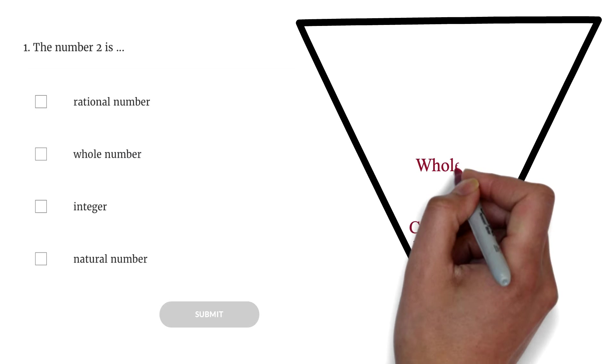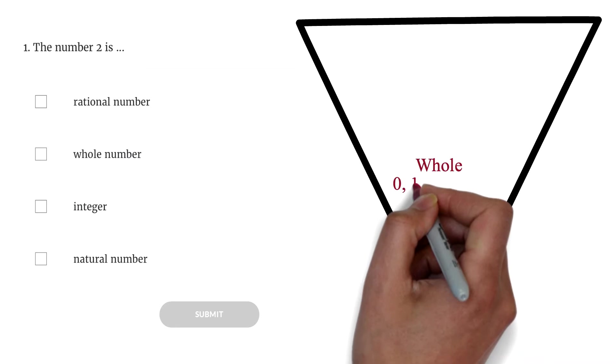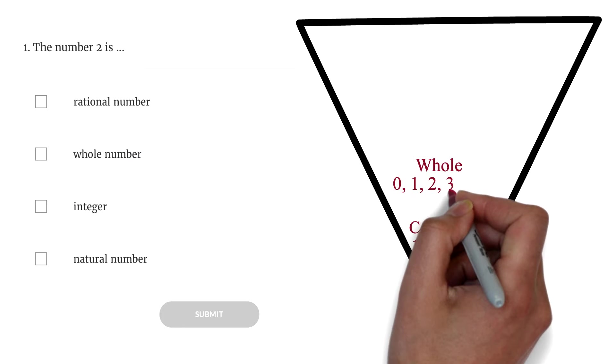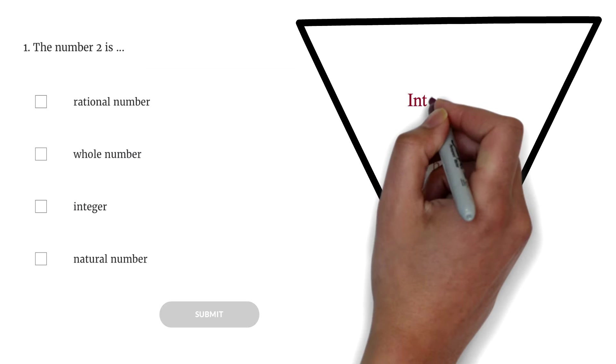When you add 0 to these numbers, we have whole numbers. So whole numbers are 0, 1, 2, 3, 4, and so on.